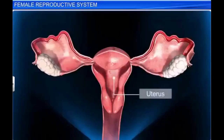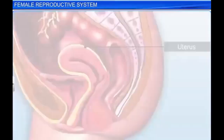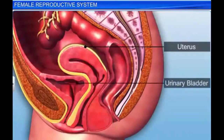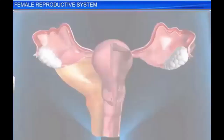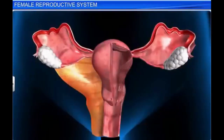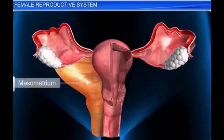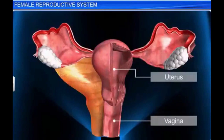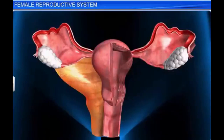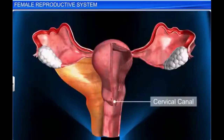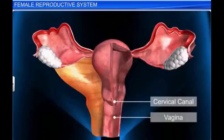The uterus is a hollow, pear-shaped, muscular organ, and is highly distensible. It is situated in the pelvic cavity between the urinary bladder and the rectum. It is also known as the womb. It is supported by ligaments attached to the pelvic wall, known as mesometrium. The uterus opens into the vagina through a narrow cervix. The cavity of the cervix is called the cervical canal, which, along with the vagina, forms the birth canal.